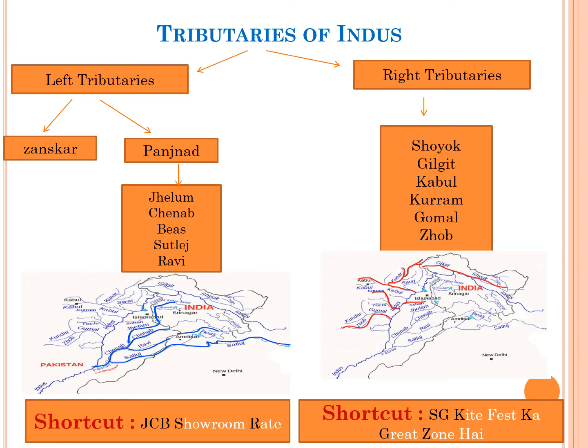The right tributaries are Shoyak, Gilgit, Kabul, Kurram, Gomal and Job. The shortcut to remember these right tributary names is 'SG kite festival ka great zone hai', where the highlighted letters are the first letters of the right tributaries of the Indus river.